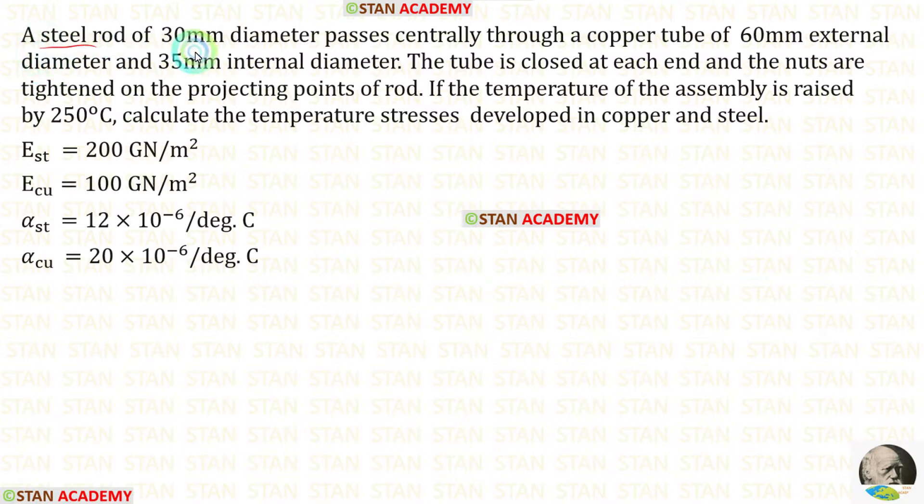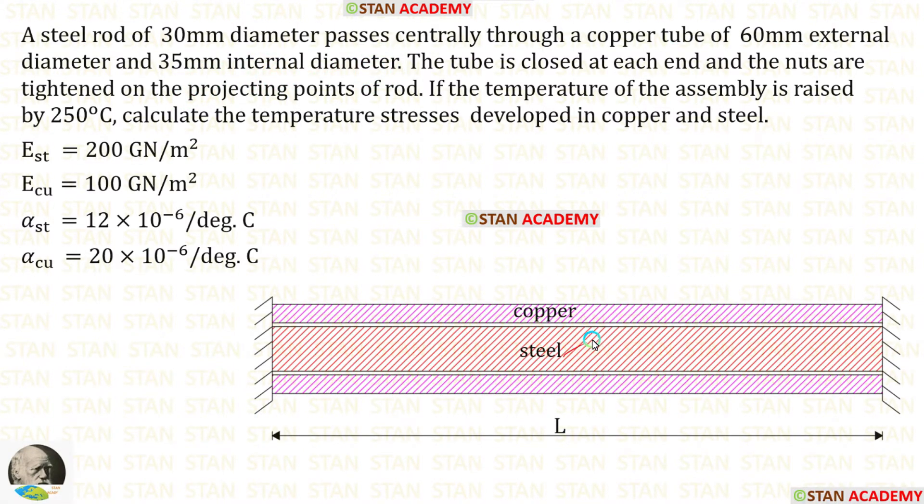A steel rod of 30 millimeter diameter passes centrally through a copper tube of 60 millimeter external diameter and 35 millimeter internal diameter. The tube is closed at each end and nuts are tightened on the projecting points of the rod.